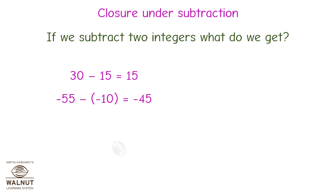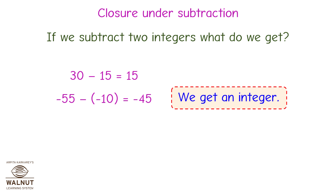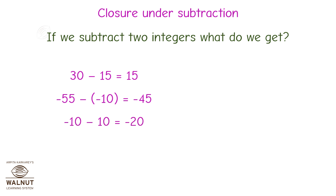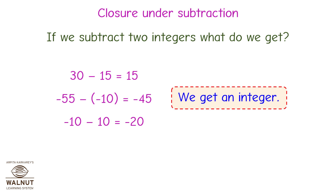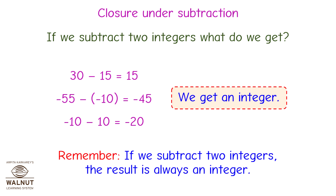Minus 55 minus minus 10 is equal to minus 45. Again, we get an integer. Let's try one more. Minus 10 minus 10 is equal to minus 20, and we get an integer again. If we subtract two integers, the result is always an integer. Therefore, we can say that the integers are closed under subtraction.